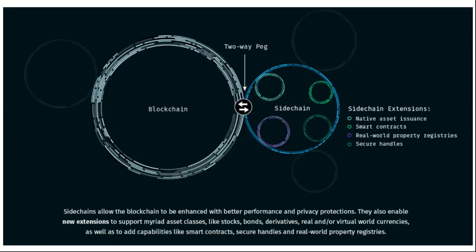Side chains allow the blockchain to be enhanced with better performance and privacy protections. They also enable new extensions to support myriad asset classes such as stocks, bonds, derivatives, real and virtual world currencies, as well as capabilities like smart contracts, secure handles, and real-world property registries.